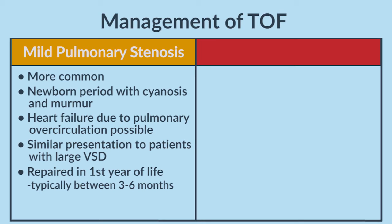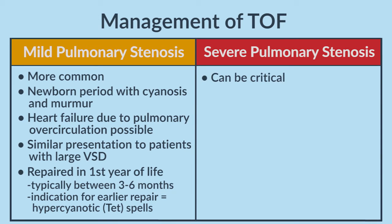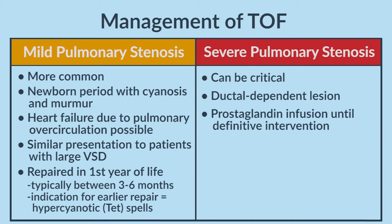One indication to repair patients much earlier is tet spells. A patient who is having a tet or hypocyanotic spell does need to have a repair — that is an absolute indication to take that patient for either a repair or a shunt. If the degree of obstruction is severe, it can be called critical. Critical pulmonary stenosis is a ductal-dependent lesion, and those patients require prostaglandins until they can have a more definitive intervention, like a repair or a shunt.